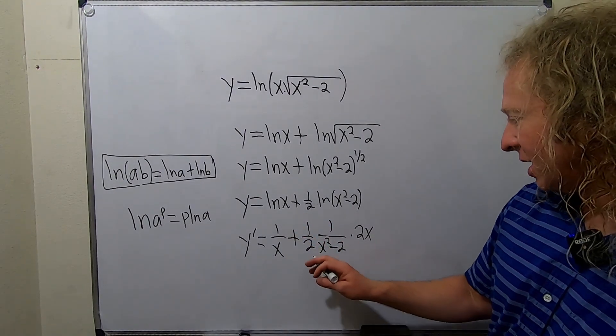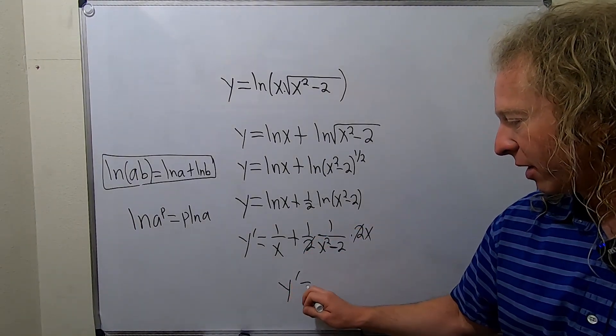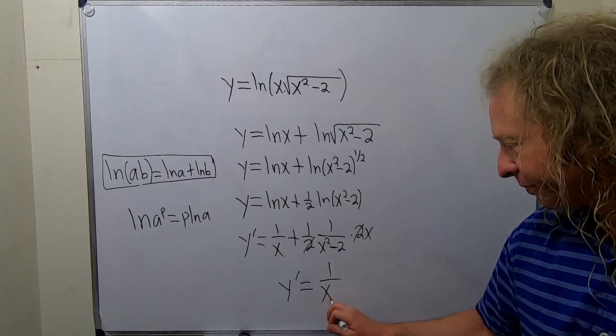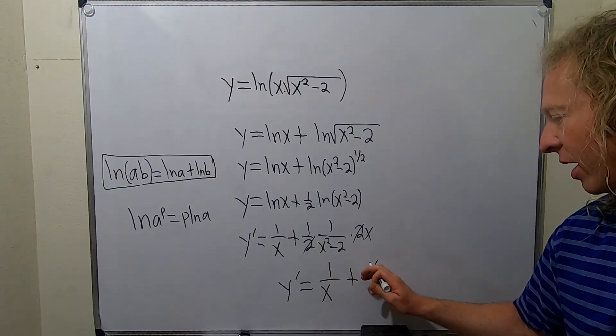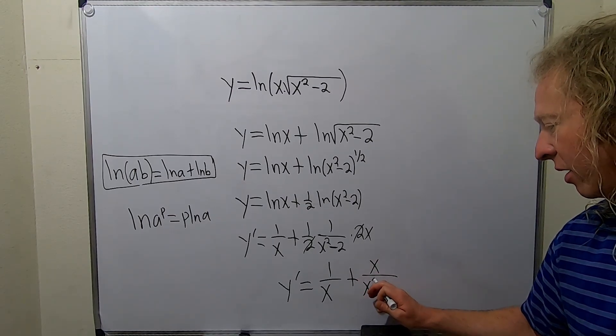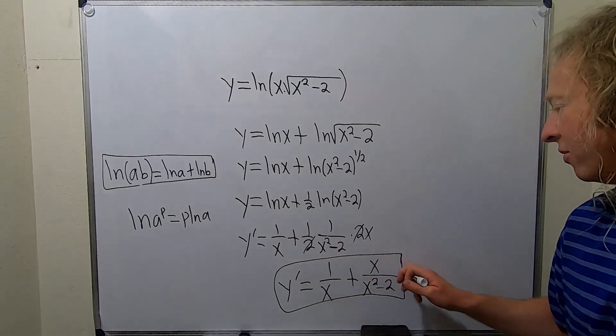So that's it. I guess these cancel, and we can just put the x up top, and that looks good. So y prime is 1 over x plus, and then x over all of this. So x over x squared minus 2. And that is the final answer.